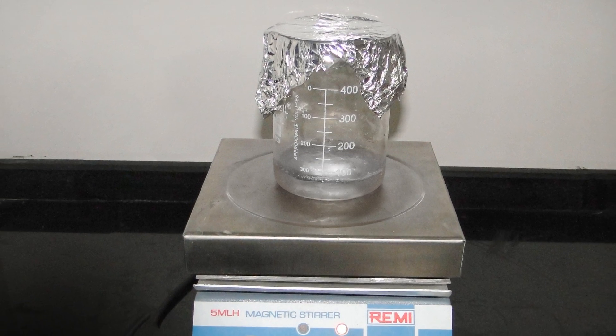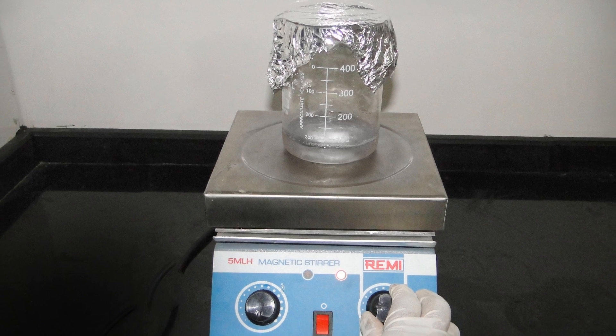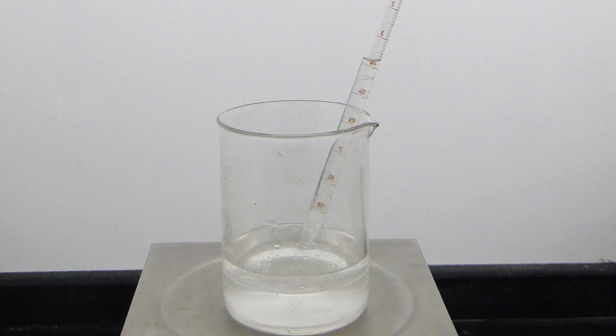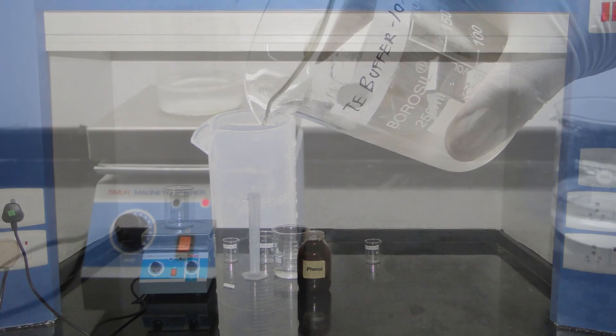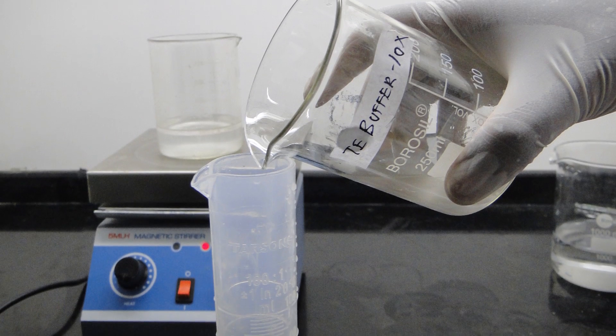Shake vigorously using a magnetic stirrer and allow the layers to separate. Aspirate the top aqueous layer. Do this in the fume hood. Repeat with a second equal volume of 10X TE.